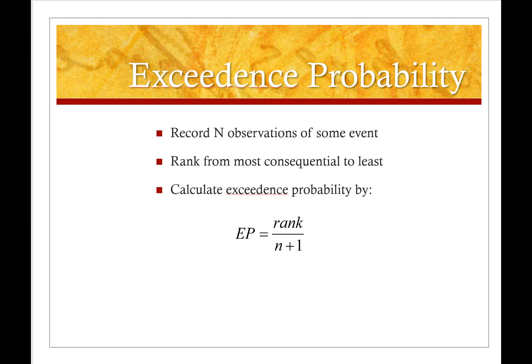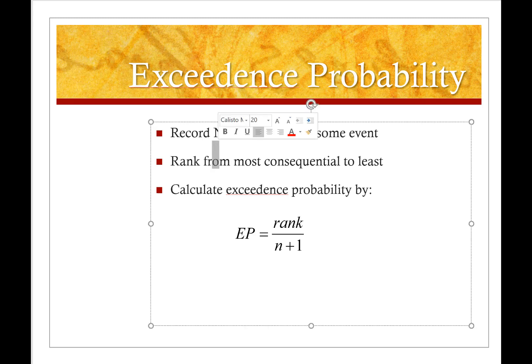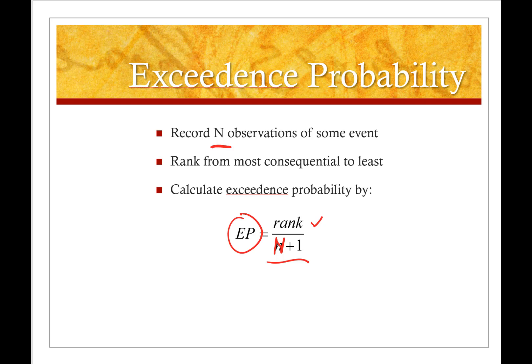What we need to do in order to calculate an exceedance probability is we have to have a number of observations of some event. I say here we have n observations of an event and then we will calculate the exceedance probability by ranking all of those events from most consequential to least consequential and divide that by the total number of observations which should be a capital N plus one. This gives us the exceedance probability. It's a really simple way of doing it. It comes from a ranked list of events and that will become clear as we move forward.